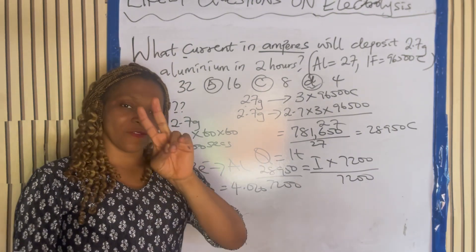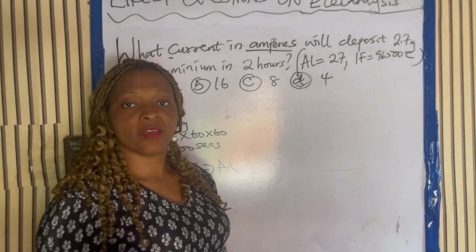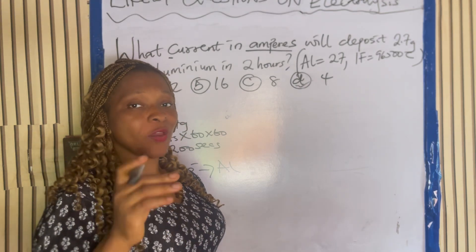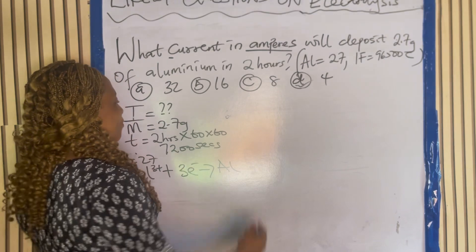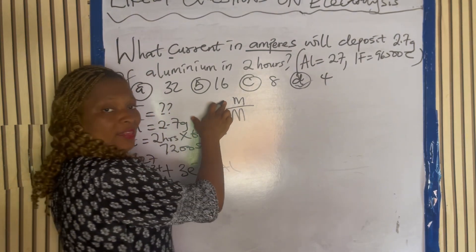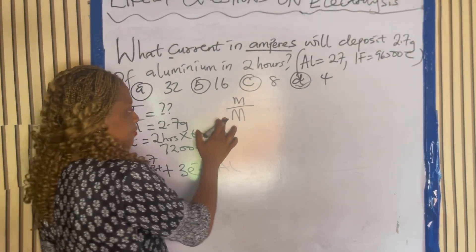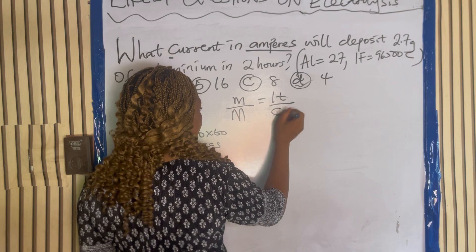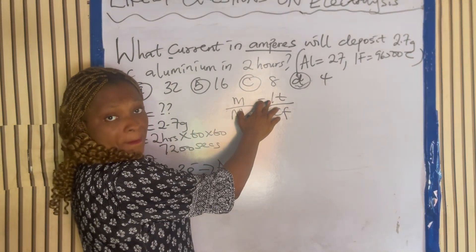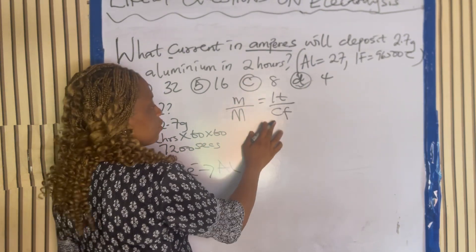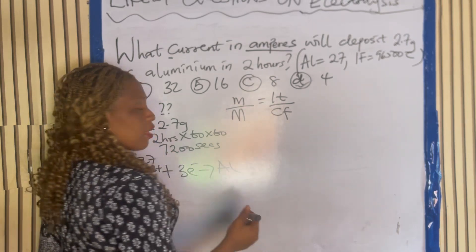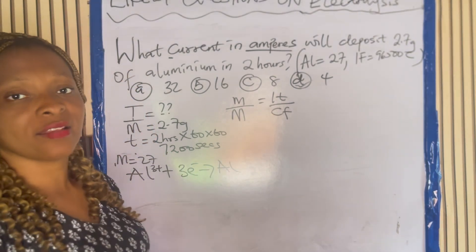Now let me give you the second, simpler method. The formula is m/M = IT/(CF), where m is mass in grams, M is molar mass, I is current in amperes, T is time in seconds, C is the charge of the element, and F is Faraday's constant, 96,500.